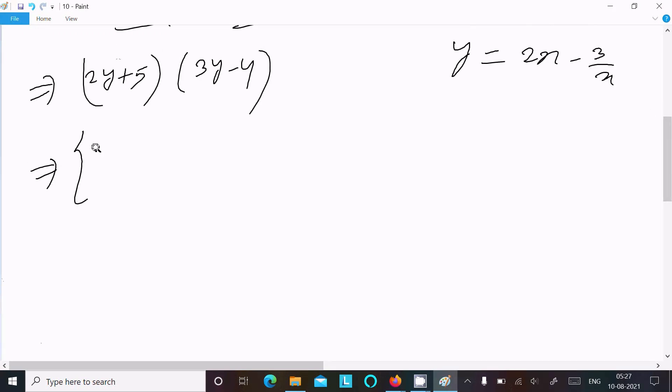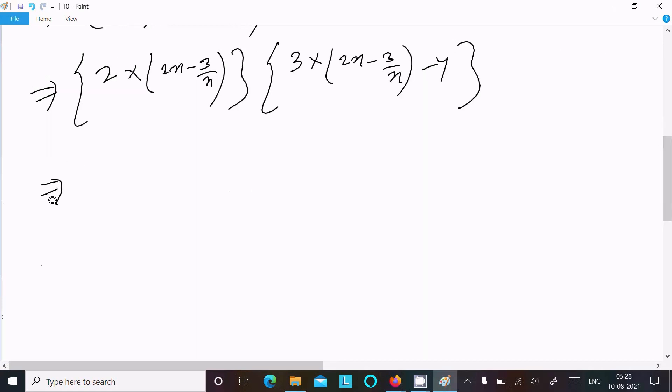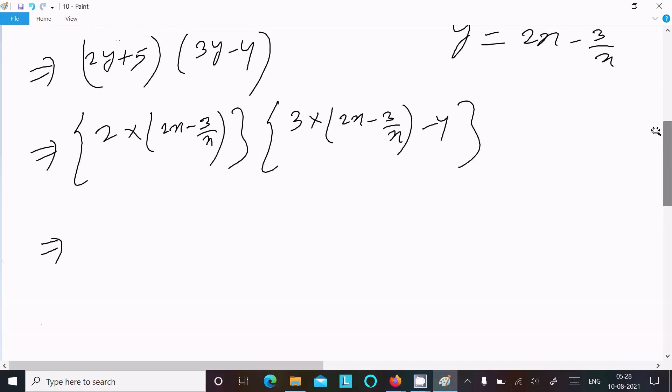So in place of y writing 2x - 3/x. Now here 3(2x - 3/x) - 4, and here in the y place I put plus 5.